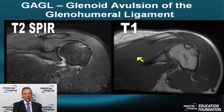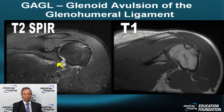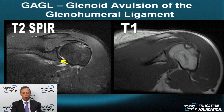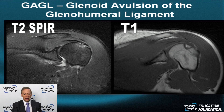Here's another GAGL-like lesion. This one is an avulsion from the glenoid. Unfortunately, the labrum has also come off from its normal position, which should attempt to hug the ball of the humerus. In this case, the inferior labrum is displaced medially under the capsule and periosteum. This qualifies the lesion as something other than a GAGL — it looks more like an ALPSA lesion, an anterior inferior labral ligamentous periosteal sleeve avulsion.